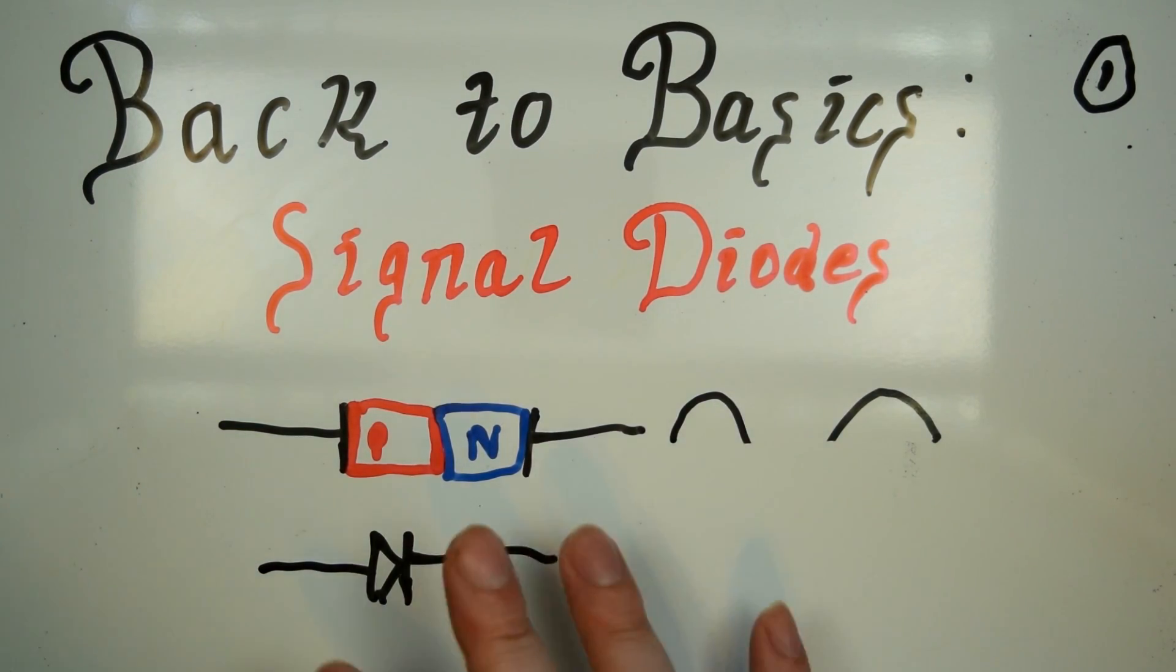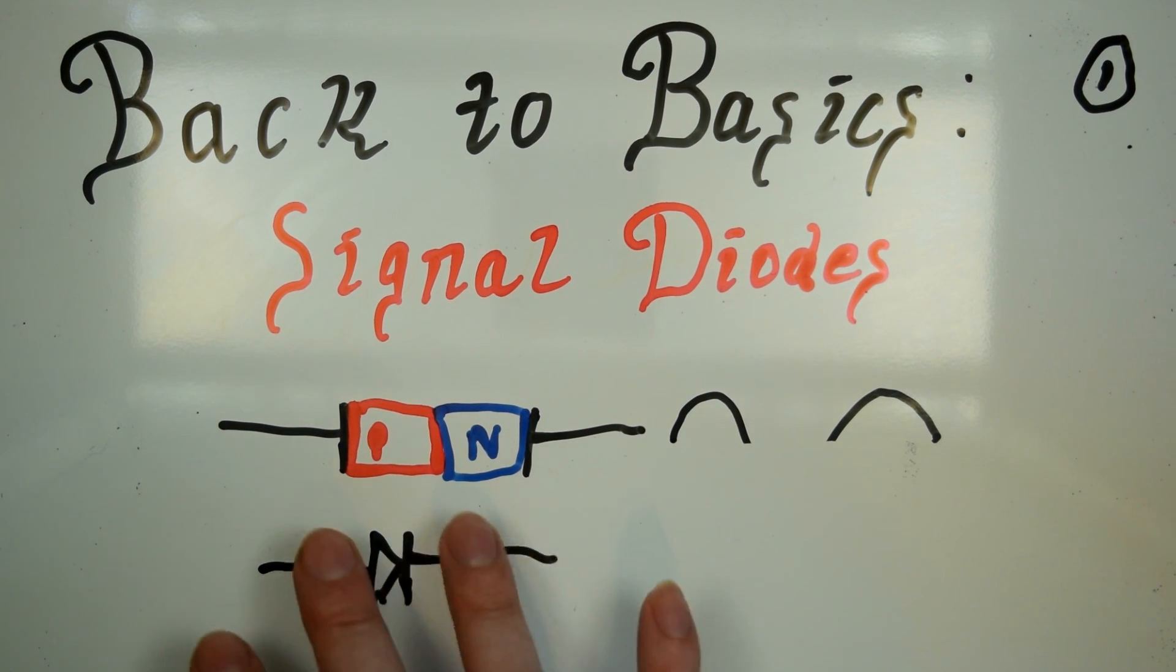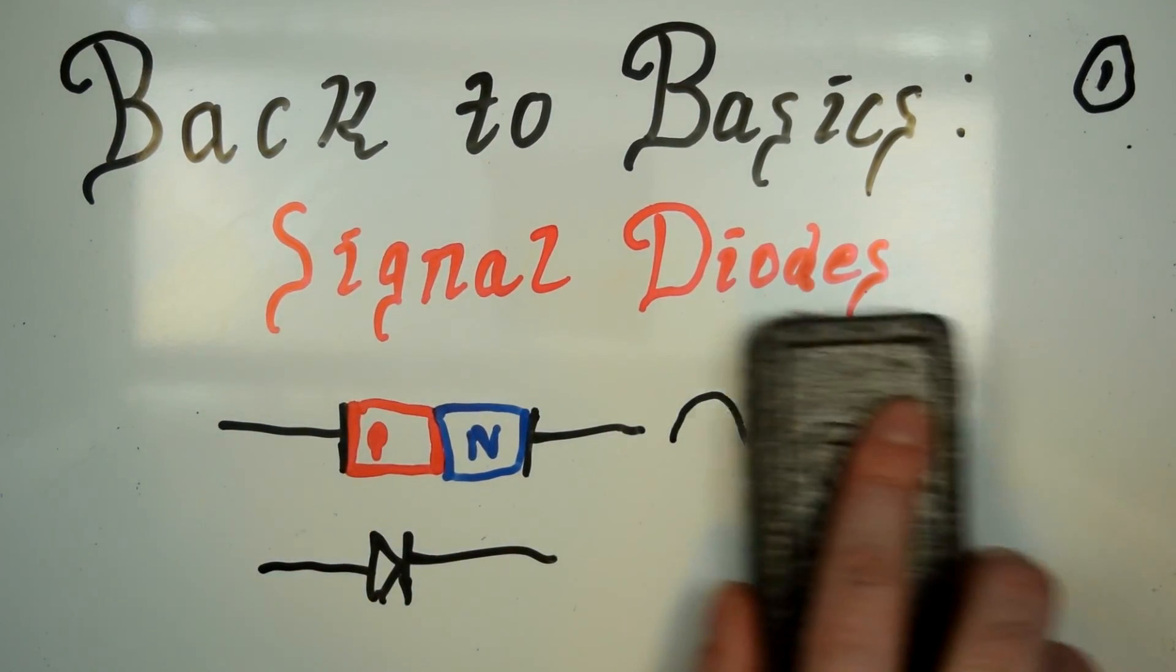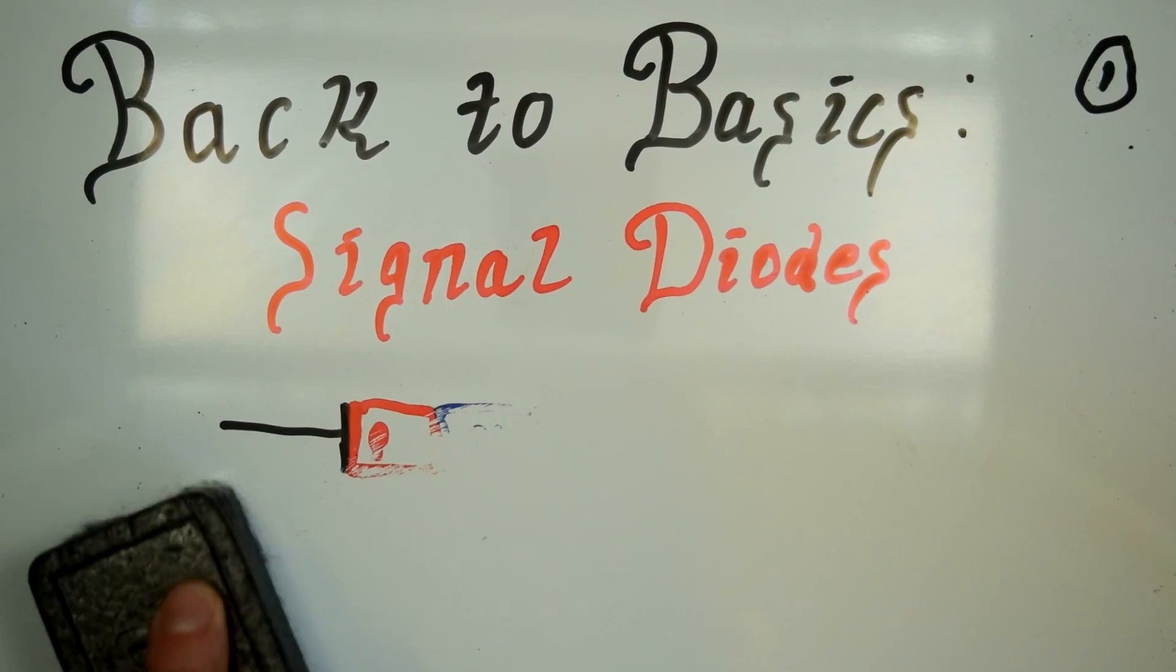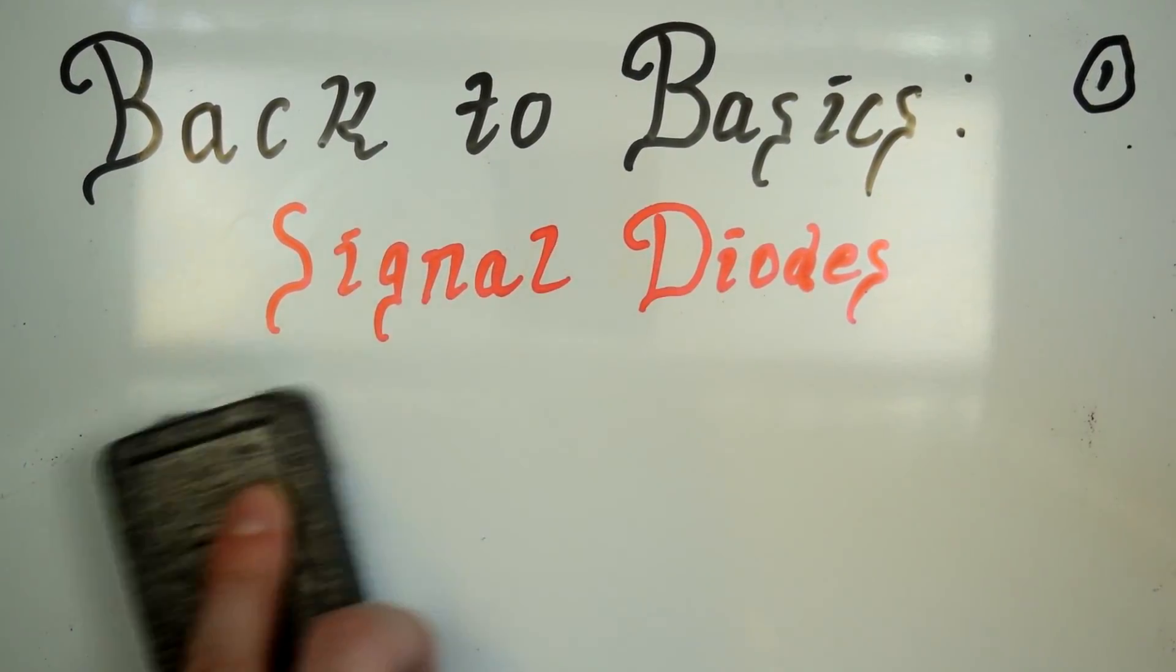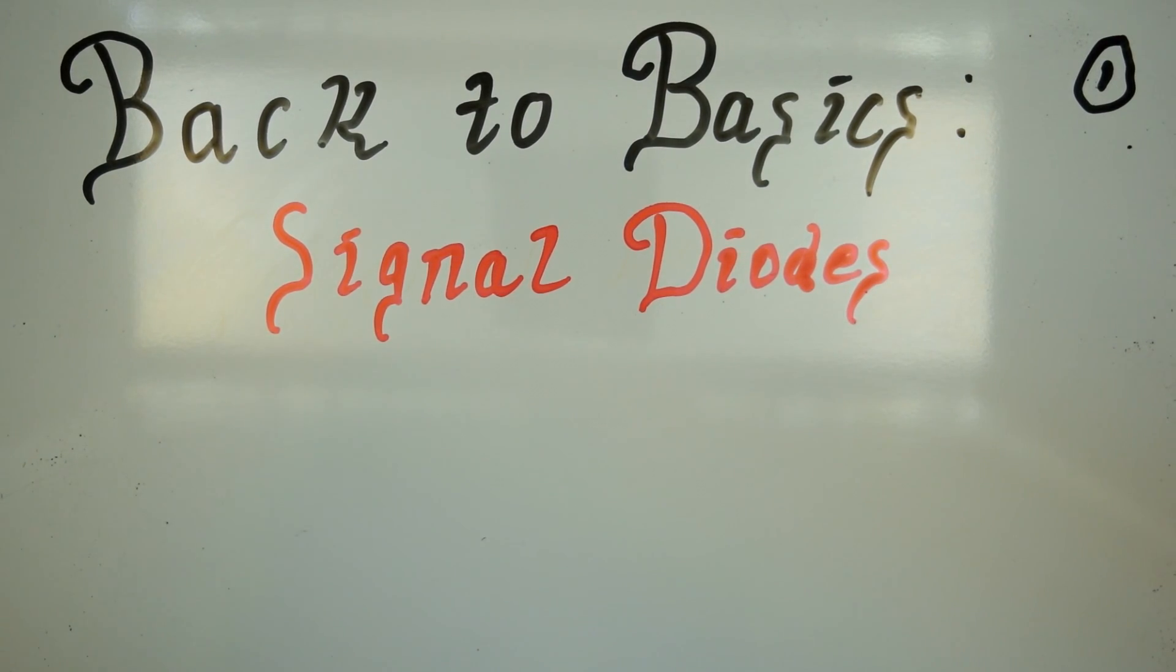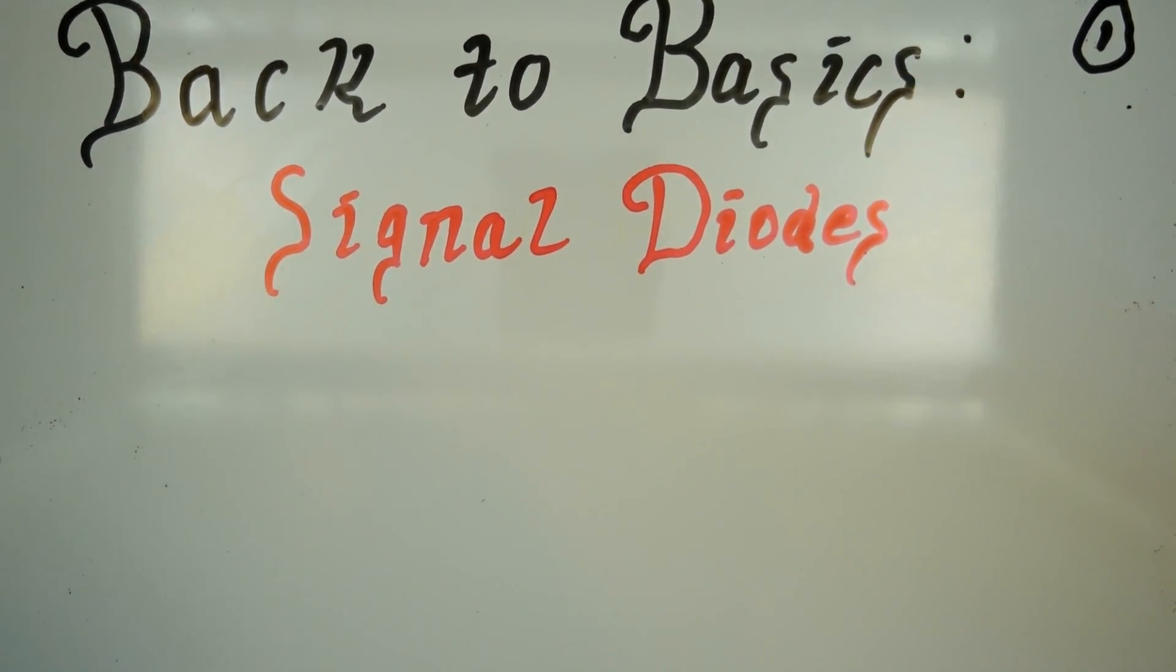I'm not really going to bother drawing it, but basically current stops liking to flow in it no matter which direction the current is flowing. So they had to come up with a way to make a diode that reacted well in high frequency conditions, and that's where the signal or small signal diode originated.